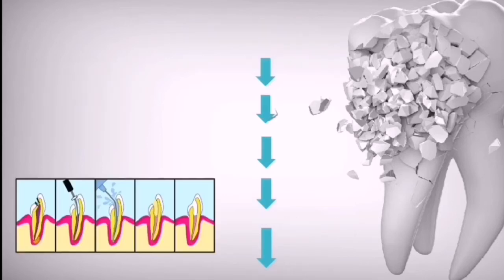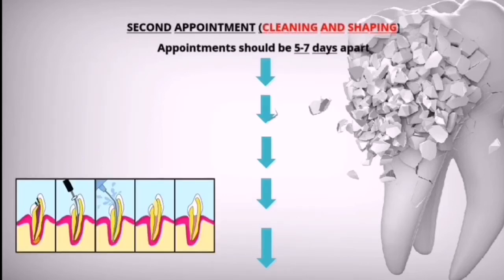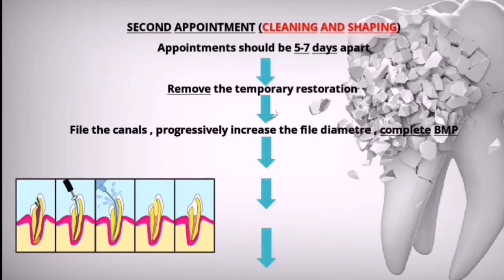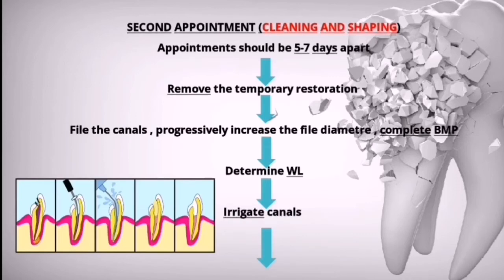The second appointment is scheduled five to seven days after the first. Remove the temporary restoration, then file the canals by progressively increasing the file diameter to complete the biomechanical preparation. Determine the working length and irrigate the canals well.